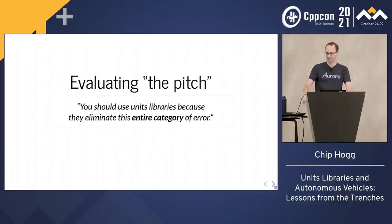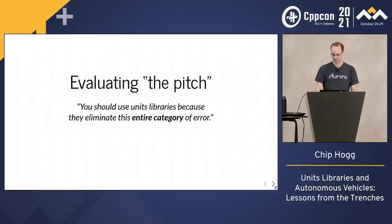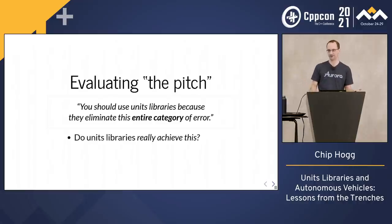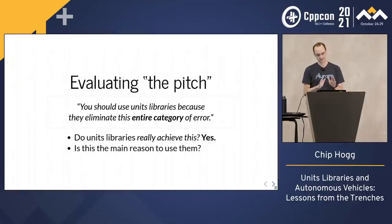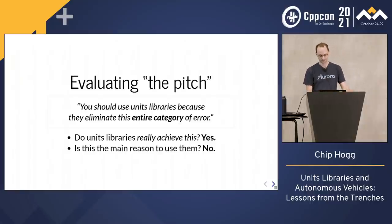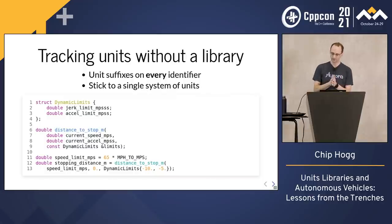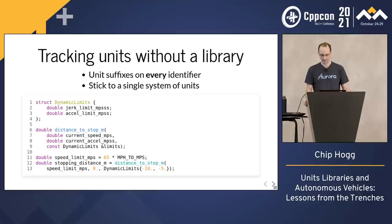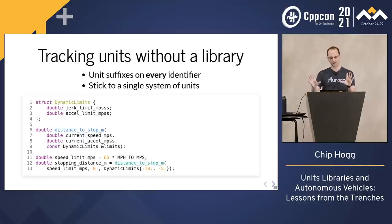So is that why we should use units libraries — to prevent unit errors? The truth is a little more subtle than that. Do they prevent this kind of error? Yeah, they do. But is this the main benefit that they bring? Not really. It turns out that in practice, unit errors are extremely rare, at least everywhere that I've worked. Changing all your numeric types to solve a problem that almost never happens is just maybe not the most compelling sales pitch.